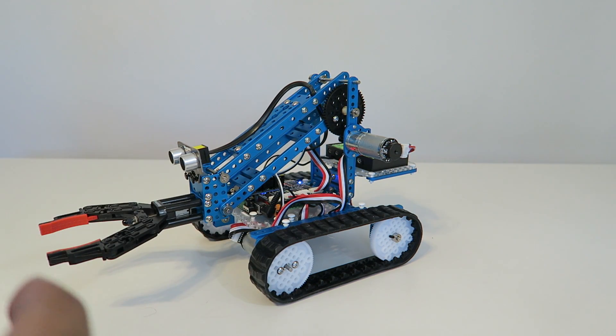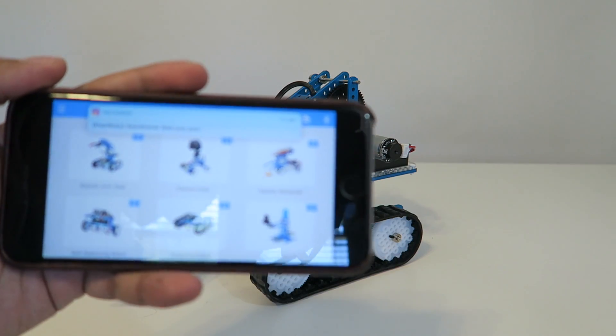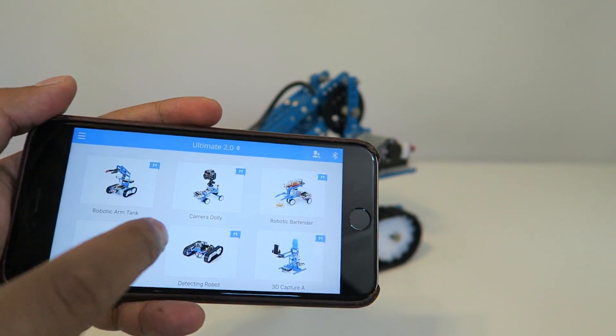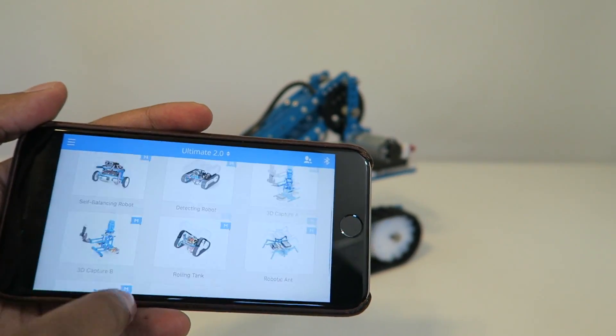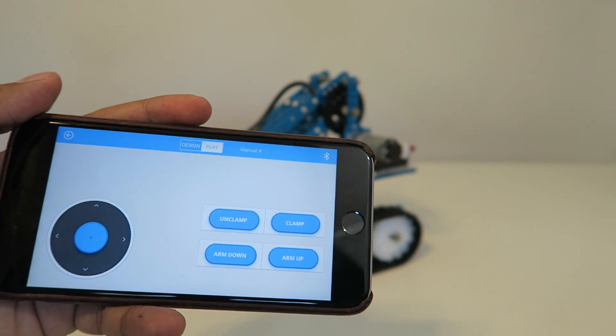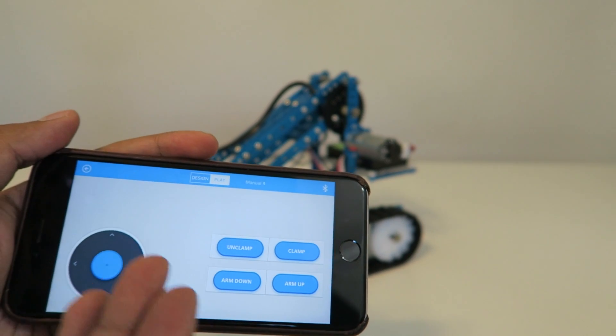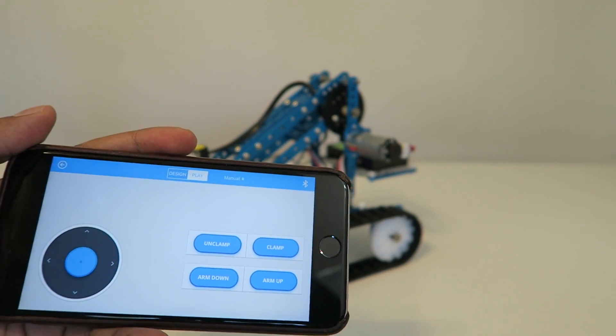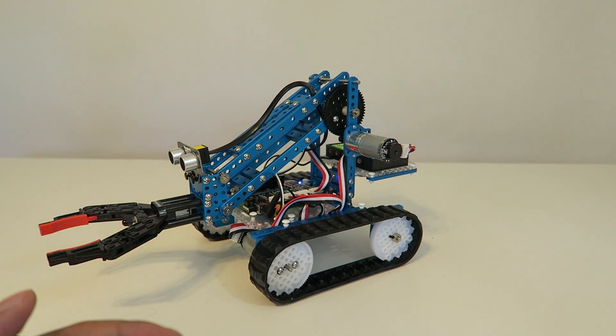So the way it kind of works is when you turn on the app itself, you go ahead and click on Ultimate 2.0, in which it'll show you all the different robots that you can build, but since we did the robotic arm tank, I'm gonna go ahead and click on that, and then in the app itself, it's really self-explanatory, there's a clamp, arm up, arm down thing, so let's see how this works.